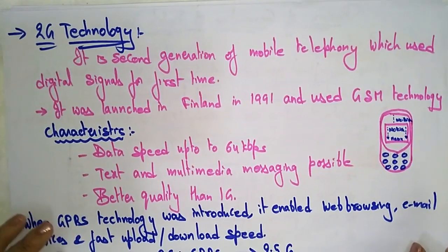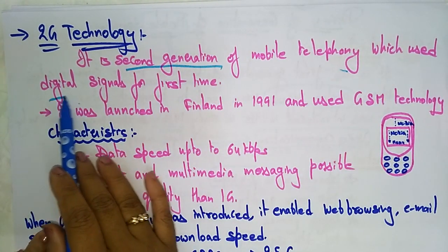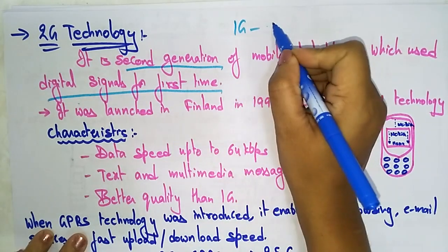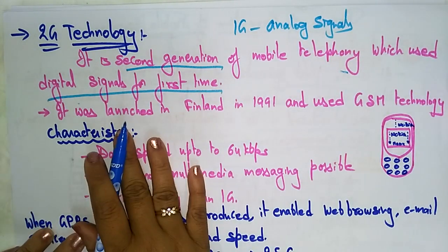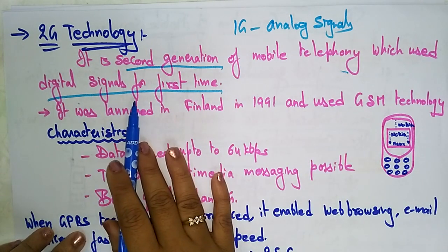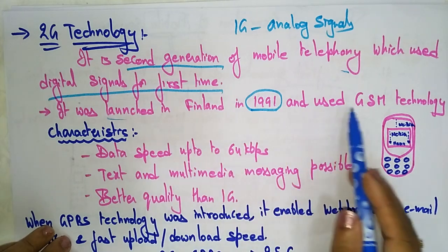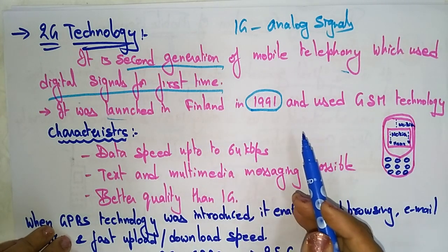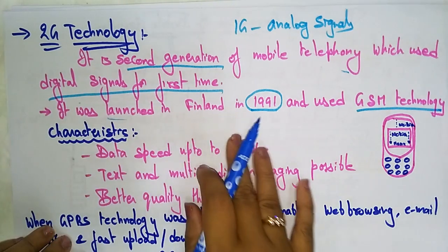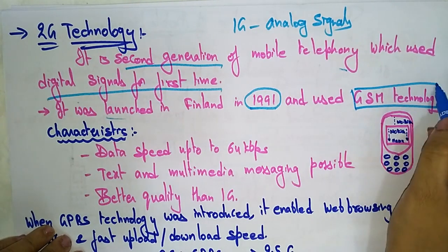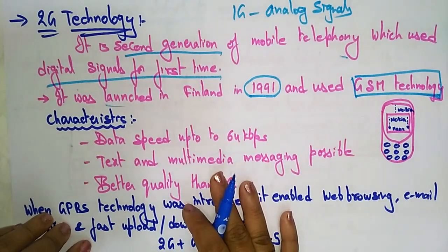Now moving to the next generation: 2G. The second generation of mobile telephone used digital signals for the first time, whereas in 1G only analog signals were used. It was launched in Finland in 1991 and used GSM technology. Remember: GSM technology was introduced with the 2G second generation technology.